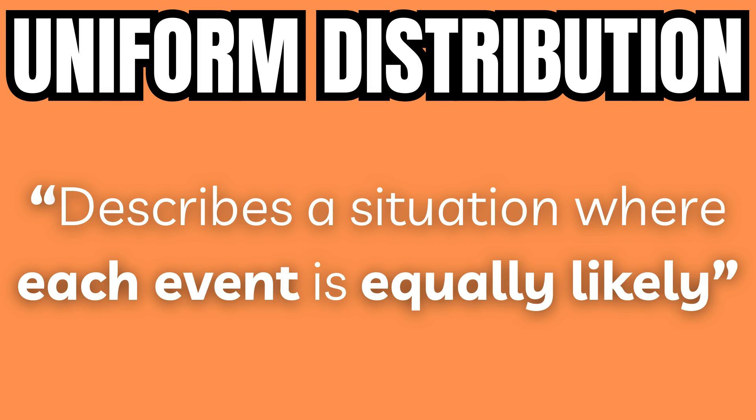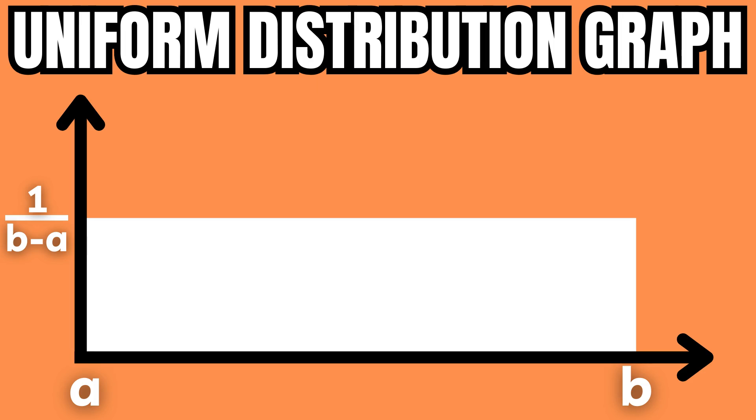A uniform distribution describes a situation where each event is equally likely to occur. Therefore, graphs of uniform distributions always have a rectangular shape because the likelihood of every event is the same.